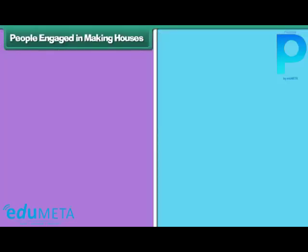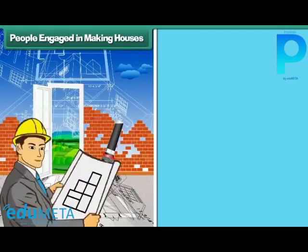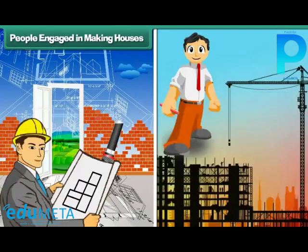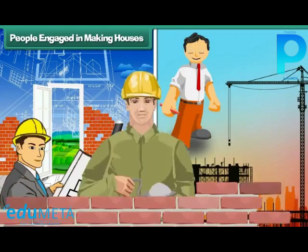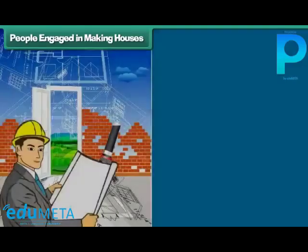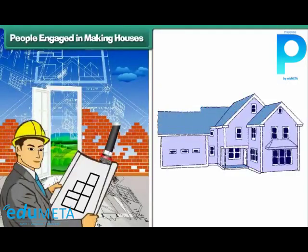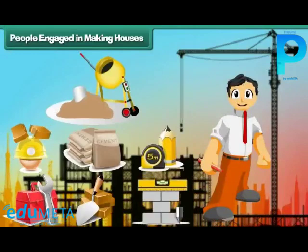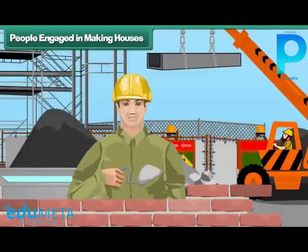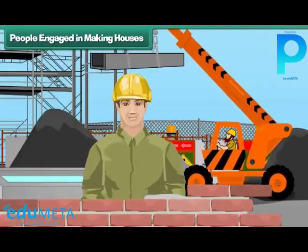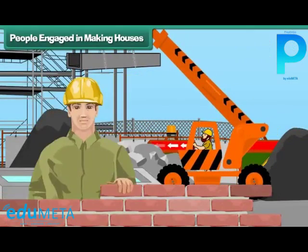Many people are involved in making a house. They are the architect, engineer, and laborers. The architect designs the house. The engineer suggests materials for building the house. The laborers build the house with brick, cement, and concrete.